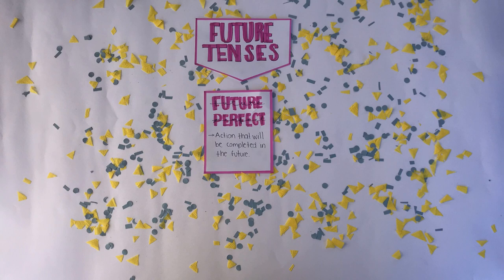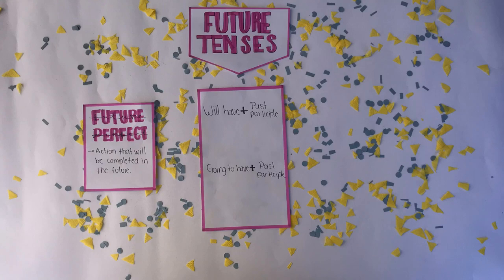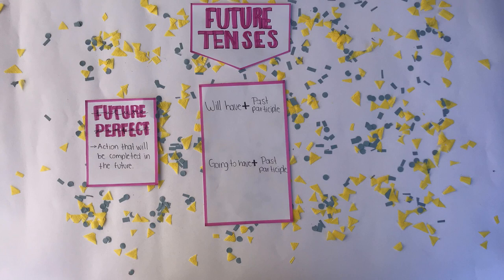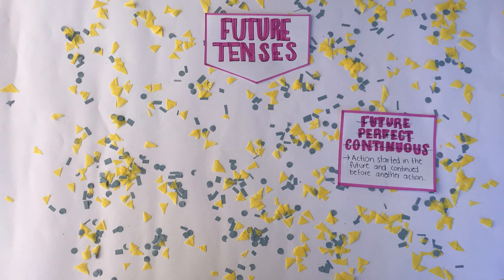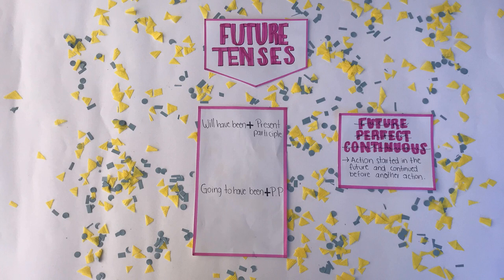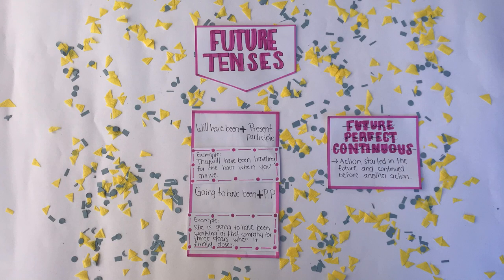Future perfect describes an action that will be complete in the future. We use will have or going to have plus past participle — for example, you will have finished by the time I am ready, or you are not going to have finished by the time I am ready. Future perfect continuous describes an action started in the future and continued before another action. We use will have been or going to have been plus present participle — for example, they will have been traveling for one hour when you arrive, or she is going to have been working at that company for three years when it finally closes.